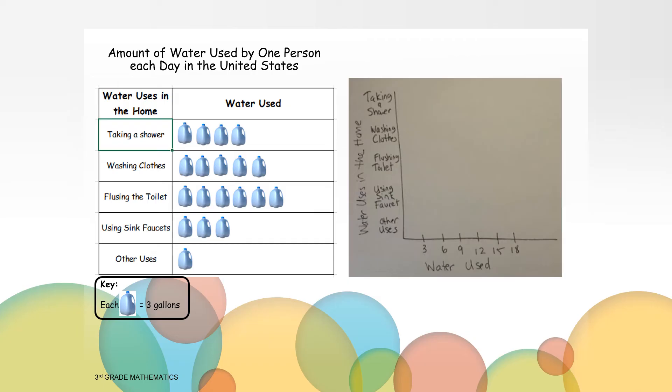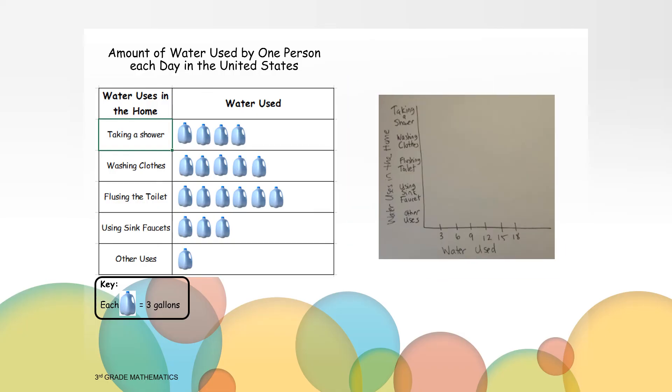Draw hash marks and label them 3, 6, 9, 12, 15, and 18. So what should we do next? Good idea! Let's draw our bars.